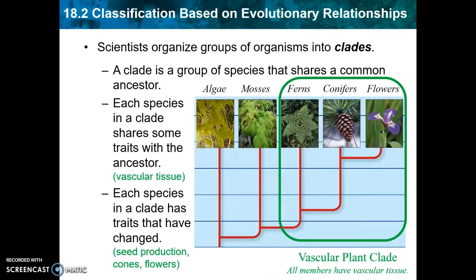Let's look at an example using different types of plants to discuss what a clade actually is — this is where the word cladogram even comes from. A clade is the group of species that share a common ancestor. Ferns, conifers, and flowers together make up a clade within the plant kingdom characterized by plants that all have vascular tissue, which is like the blood vessels of a plant — it allows transport of water and nutrients up and down the stem. All of these plants share a common ancestor that had vascular tissue and passed it down to all of its descendants. Whenever we have one ancestor and include all of its descendants in our group, that is a clade.